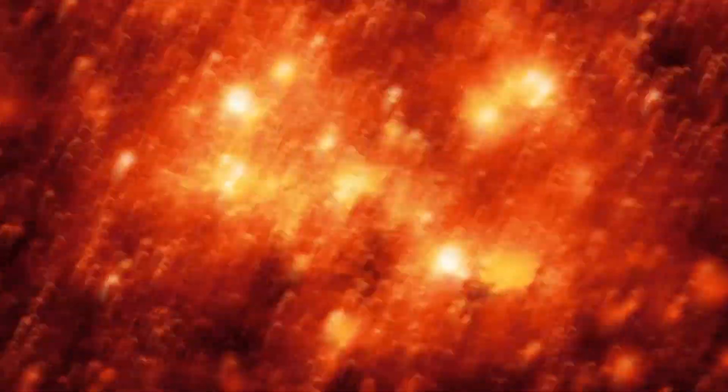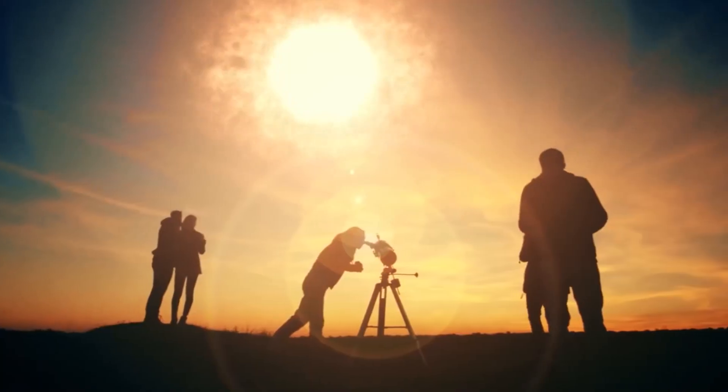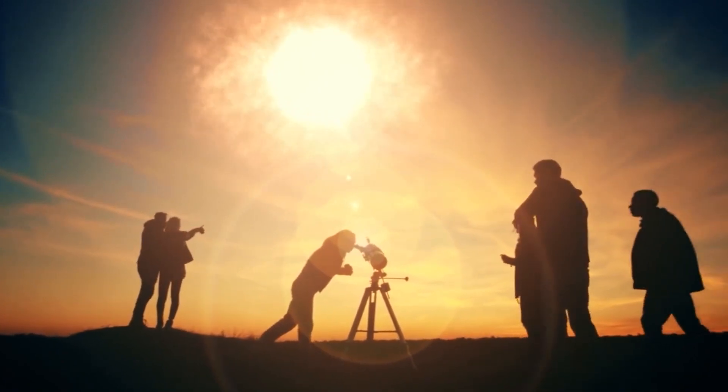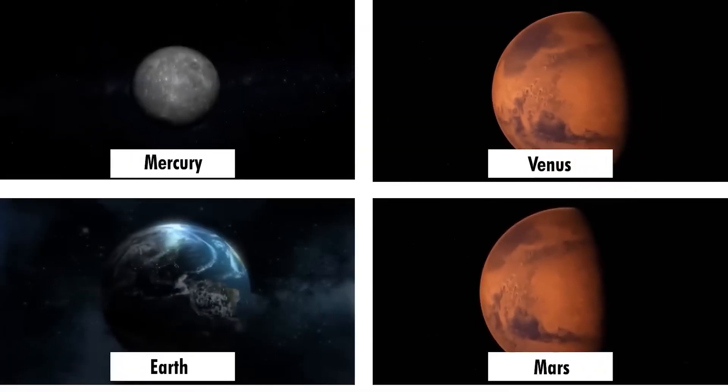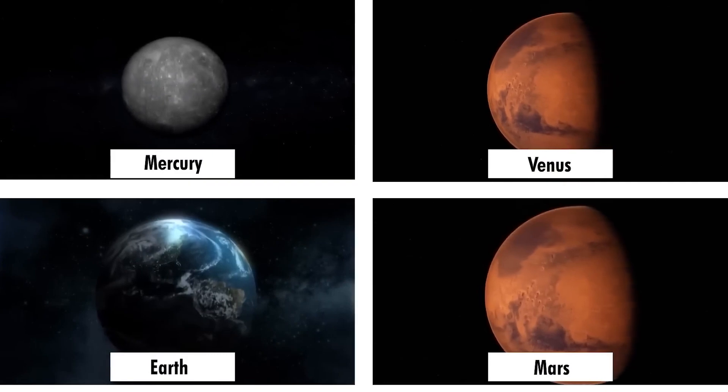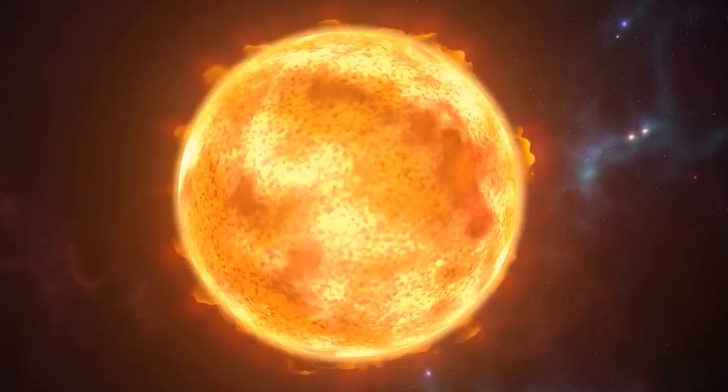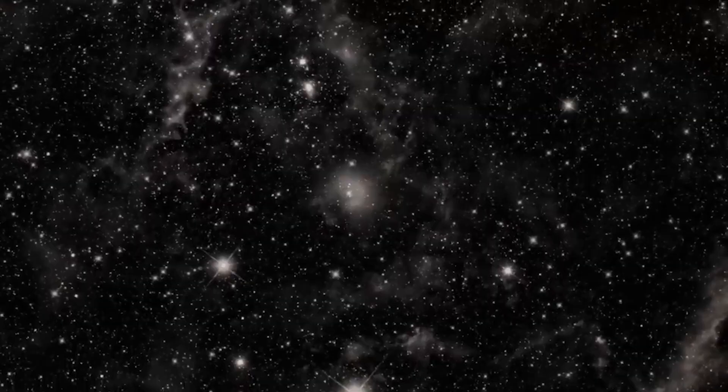Betelgeuse is a behemoth, a star so enormous that if placed at the center of our solar system, it would swallow up Mercury, Venus, Earth, Mars, and even the asteroid belt. Its scale is hard to fathom, but its fate is written in the stars.